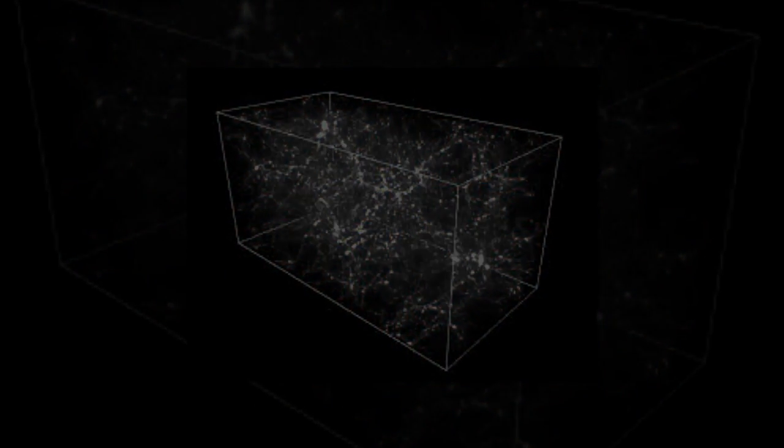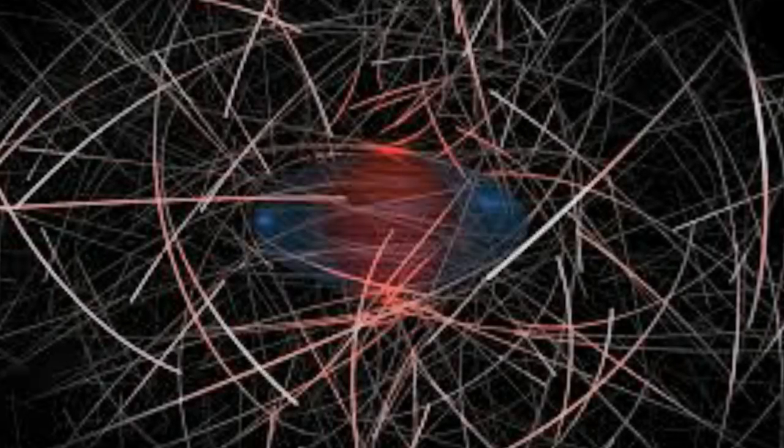The fact that this galactic bridge can affect the dwarf galaxies around us is impressive. Given the difference in scale between the two, the planes of dwarfs are around 1% of the size of the galactic bridge to Virgo.